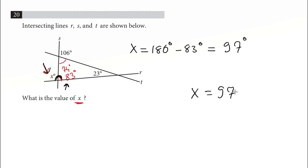X is equal to 97 degrees. Different variations of this question may be asked, but you just need to remember the simple rule. The sum of internal angles of a triangle is 180 degrees, and the angle of a straight line is 180 degrees.